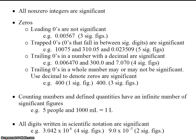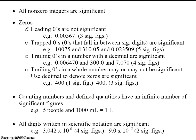Here are all the rules for sig figs — there are a lot of them. All non-zero integers are significant. That's pretty easy, but when we deal with zeros, that's where it becomes more challenging.